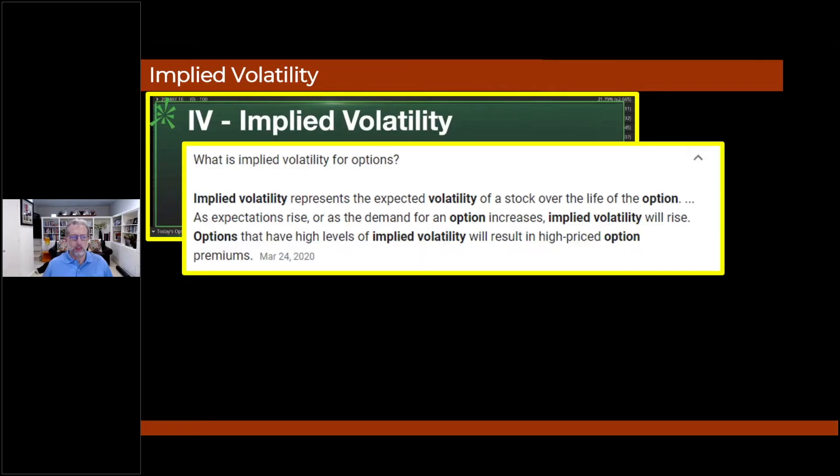Let's go to the next definition of implied volatility. Implied volatility represents the expected volatility of a stock over the life of the option. As expectations rise or as the demand for the option increases, implied volatility will rise. Options that have high levels of implied volatility will result in high-priced option premiums.